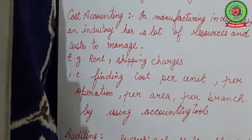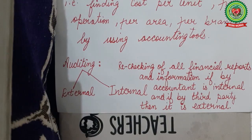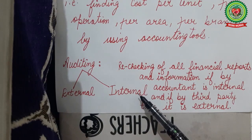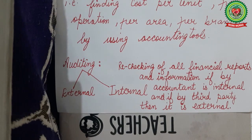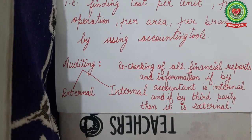The next type of accounting is auditing. Auditing is of two types: internal and external. Internal auditing is when the accountant who prepares the accounts rechecks and compares already-made accounts with source information. External auditing is when the company hires a professional known as an auditor — a third party from outside — to analyze the accounts.